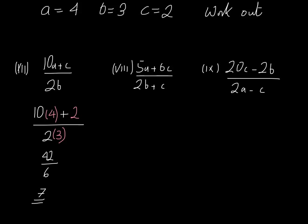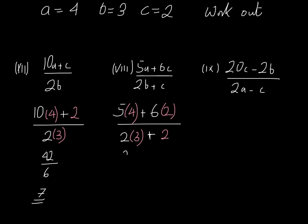5A plus 6C all divided by 2B plus C. So 5A is going to be 5 brackets 4, plus 6C so it's going to be 6 brackets 2, all divided by 2 brackets 3 because B is 3, plus C which is 2. 5 multiplied by 4 is 20 plus 6 multiplied by 2 is 12. So 20 plus 12 divided by 2 multiplied by 3 is 6 plus 2. 20 plus 12 is 32 and we're dividing that by 8 on the bottom, and 32 divided by 8 is 4.